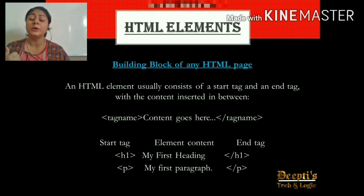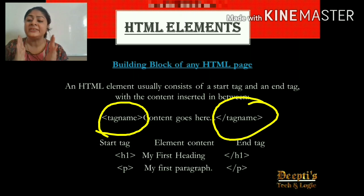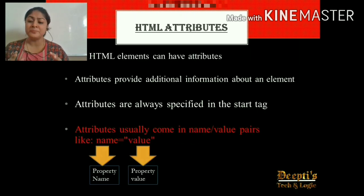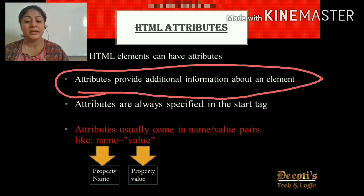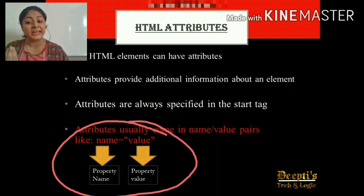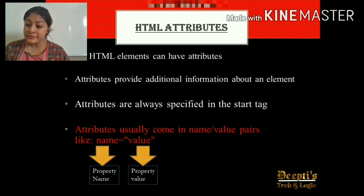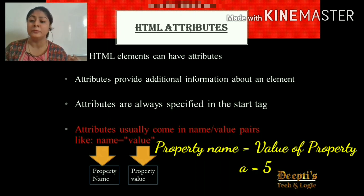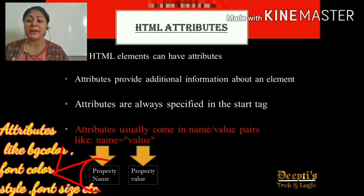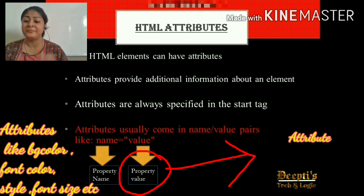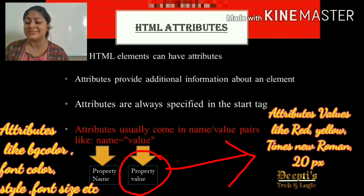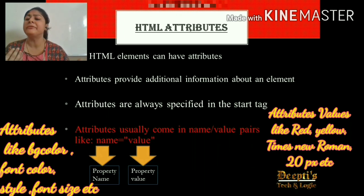An element consists of a starting tag and an ending tag, and whatever content you want to write goes in between. Attributes means the property or additional information about an element, and they always come in pairs — we give a name to the property and a value to it. Like variables in programming, you can compare attributes to a variable. For example, I take variable 'a' and give it value 5. In the same way, we can take attributes like background color, font, size, font style, and give values like red color, Times New Roman style, or 20 pixels font size.